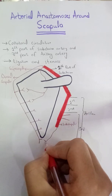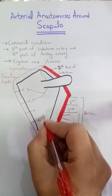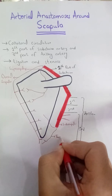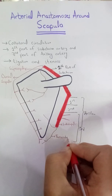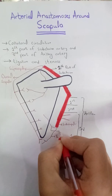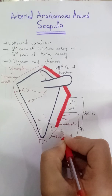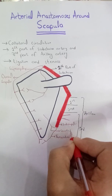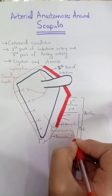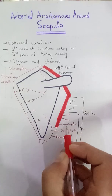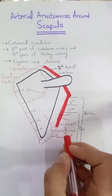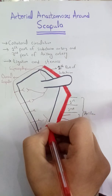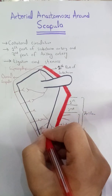This will be the thoracodorsal and this will be the circumflex scapular. These are the branches of the subscapular artery, which is the branch of the third part of the axillary artery. This will also anastomose with all these vessels.